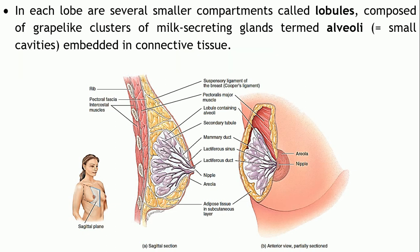Each lobe is divided into further smaller compartments known as lobules. These lobules are composed of grape-like clusters which secrete the milk — these structures are called alveoli. Similar clusters of alveoli are also present in the lungs. In the mammary gland, these grape-like clusters are milk-secreting glands called alveoli, embedded in connective tissue.